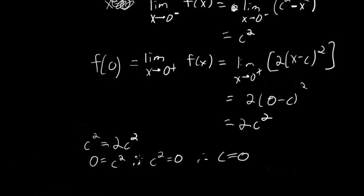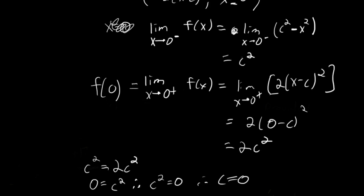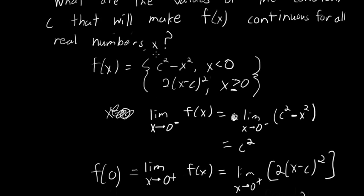So c equals 0 is the value of c that will make f of x continuous for all values of x. We started by noting it's continuous for all values other than 0 because both chunks of this function are polynomial expressions, so they're continuous wherever they're defined. The only issue is having different polynomial chunks right at x equals 0, so we need c such that f of 0 equals the left-hand limit equals the right-hand limit.